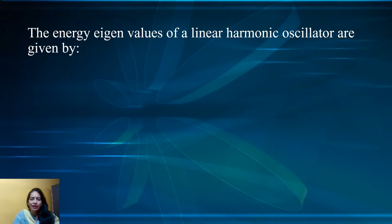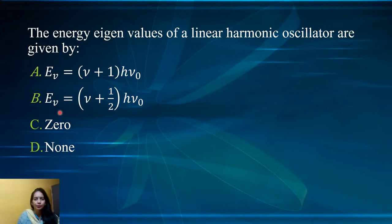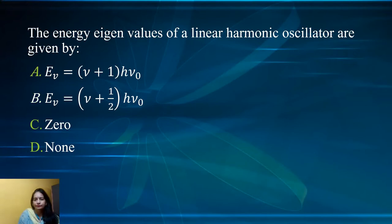Next question: the energy eigenvalue of a linear harmonic oscillator is given by — E_ν = (ν + 1)hν₀, E_ν = (ν + ½)hν₀, zero, or none. The correct expression for the energy eigenvalue of a linear harmonic oscillator is E_ν = (ν + ½)hν₀. So option B is the correct option.